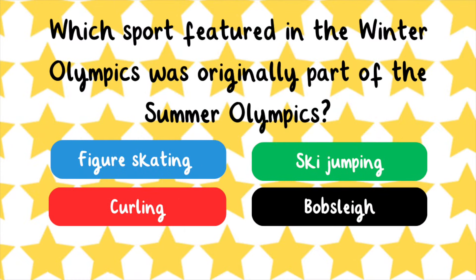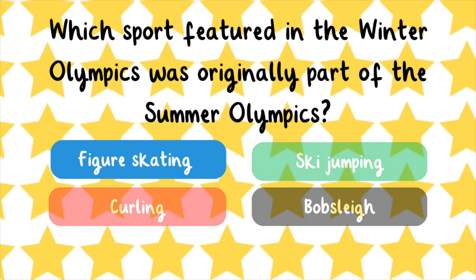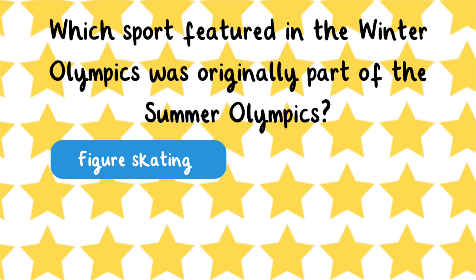Which sport featured in the Winter Olympics was originally part of the Summer Olympics? Figure skating, curling, ski jumping, or bobsleigh? Figure skating. Ice hockey was also introduced as part of the Summer Games until the Winter Games began in 1924.